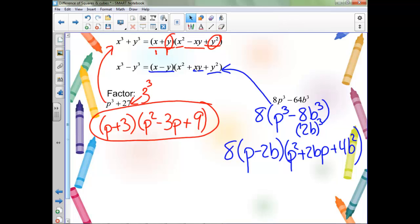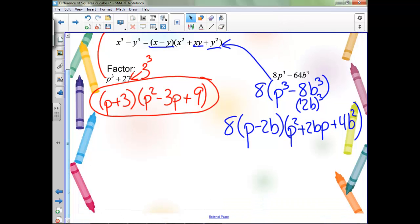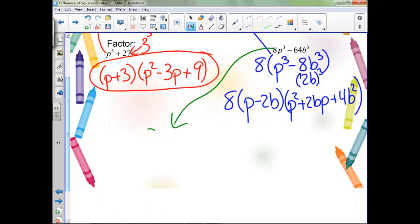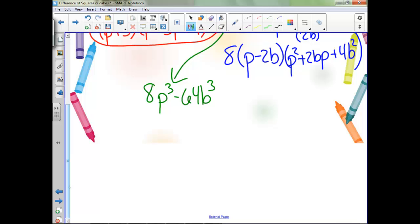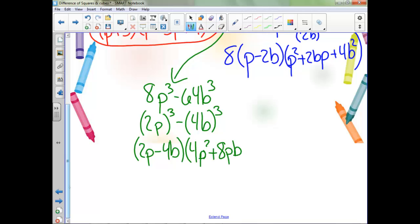However, if you hadn't noticed that right away, you could recognize that this is 2p cubed minus 4b cubed, and using that same pattern, got 2p minus 4b squared, and then 4p squared plus 8pb plus 16b squared. And now notice, there's still a 2 we can factor out of here, and a 4 we can factor out of here.